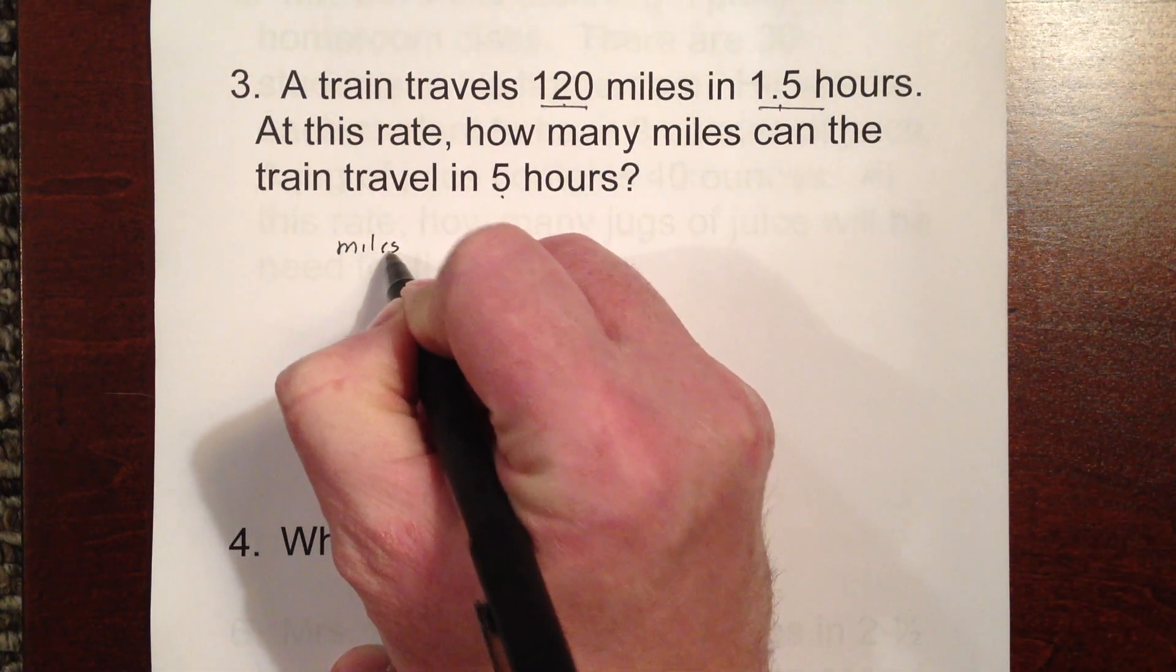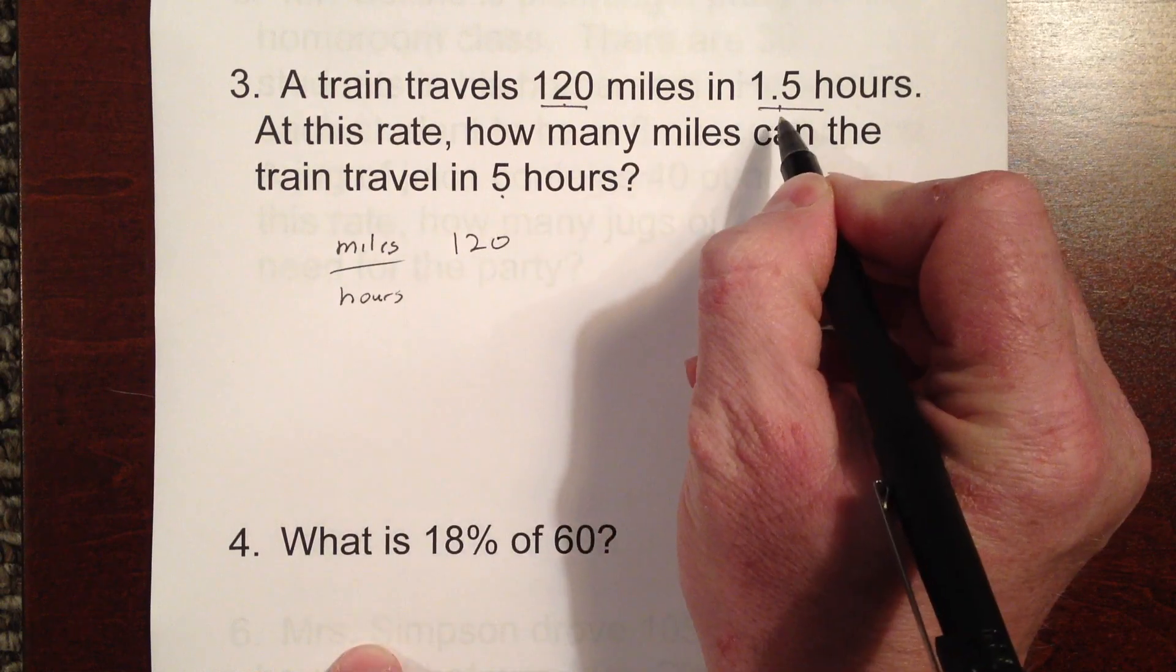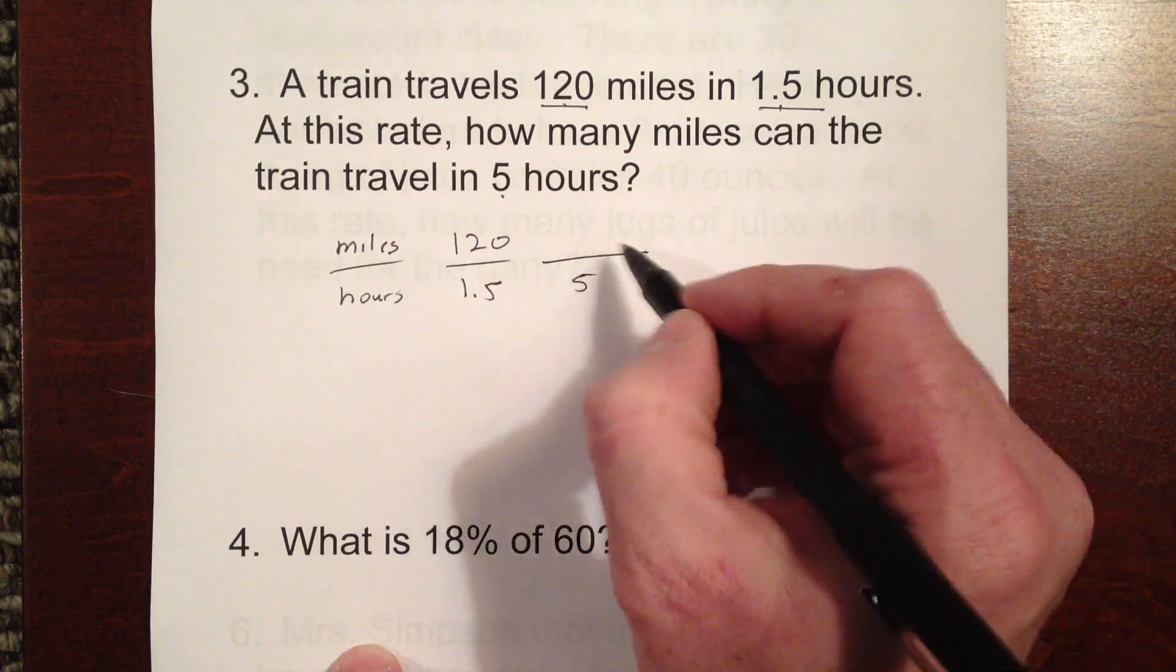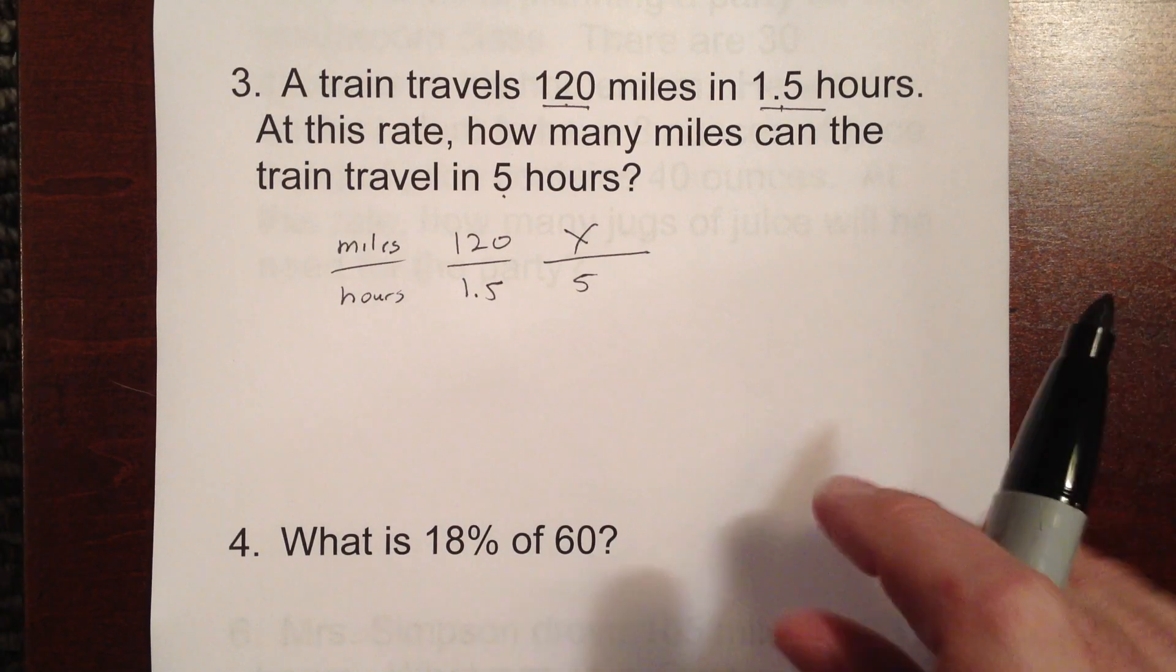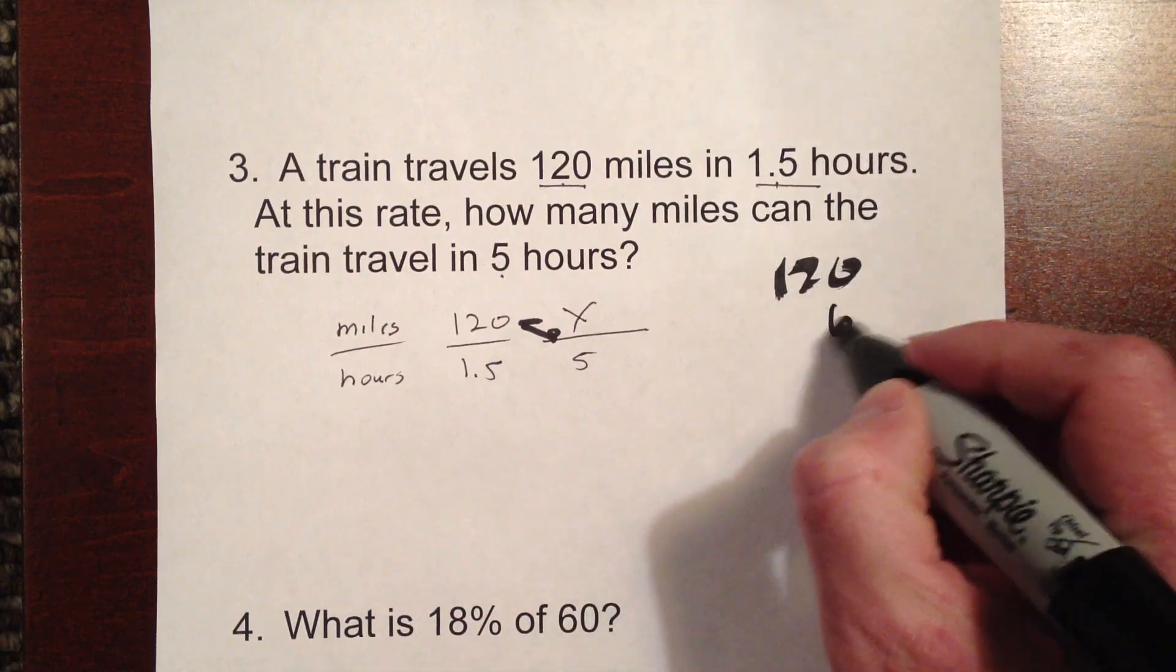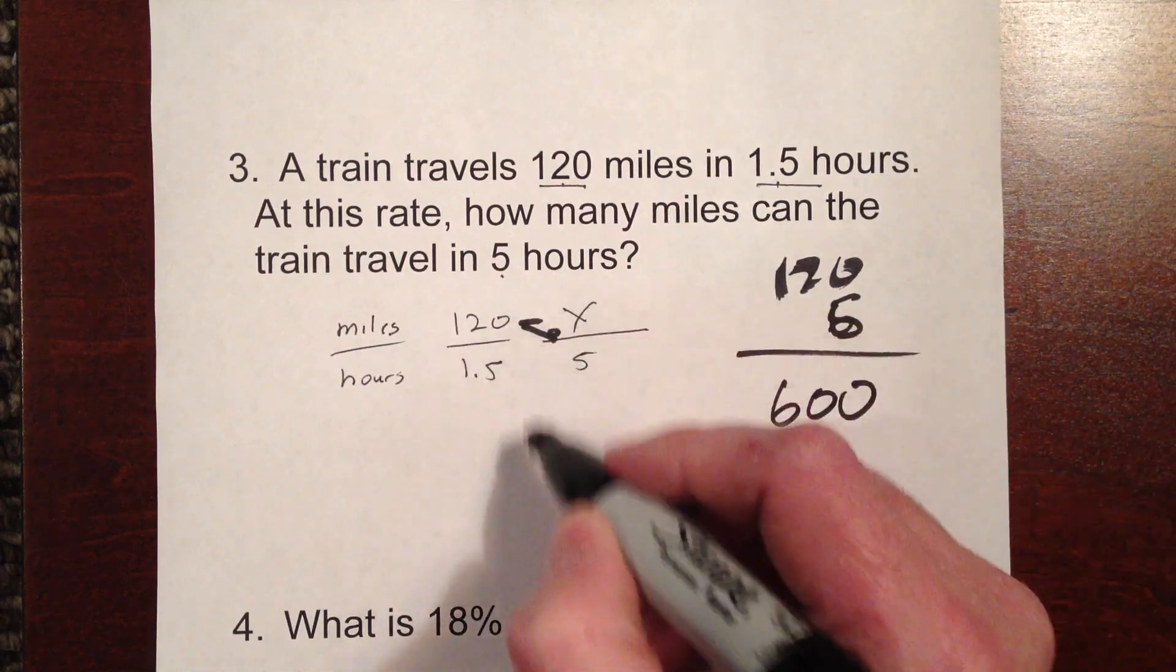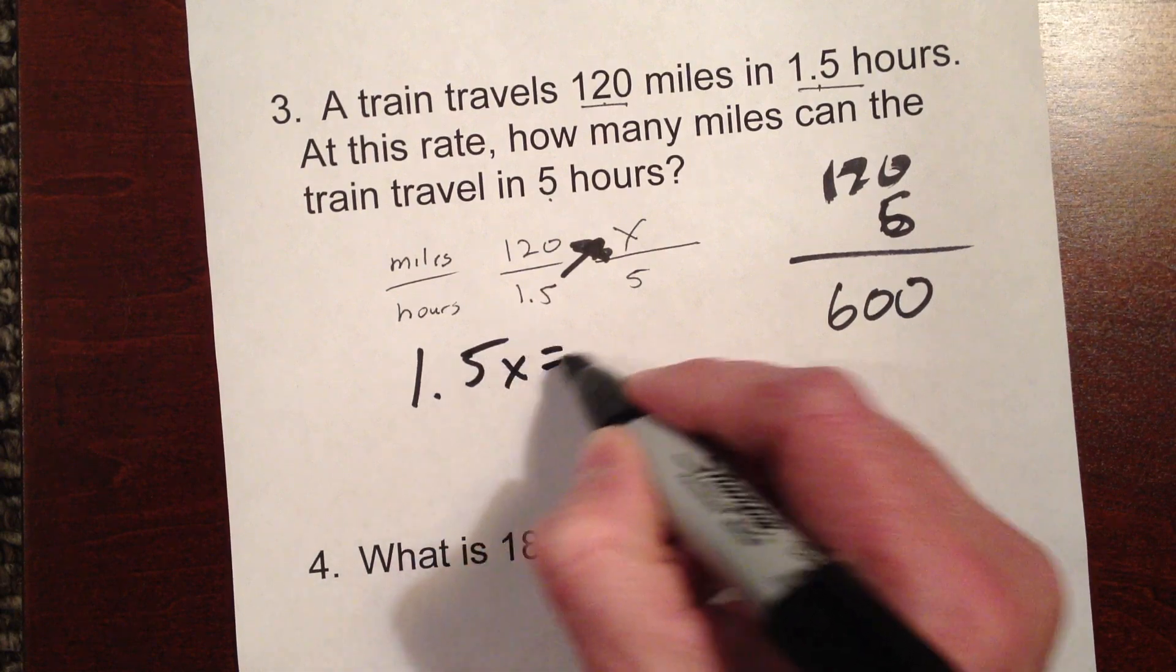So we can put miles and then hours. And go ahead and label it. Miles is 120. The first one is 1.5. Well, what's the second one? Five hours. We're going to put five here. And, of course, X is going to go here because we don't know what it is. X is going to go there because we don't know what it is. I'm going to try a bigger marker here. It might help out a little bit. So now we're left. We have to multiply these two. And 120 times 5 is 600. Well, if that's true, then this times this. 1.5 times X must be 600, too. So we're going to say 1.5X equals 600.